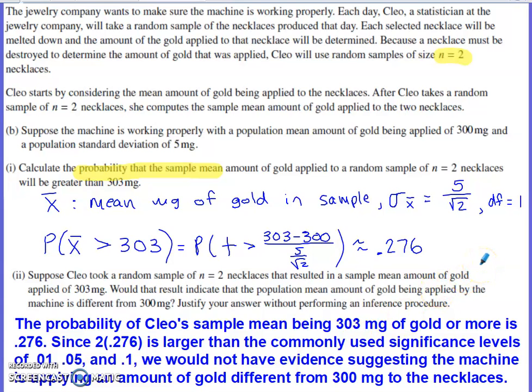And with sampling distributions for means, we're dealing with T distributions. So I also need to recognize what my degrees of freedom measure would be. And for sample means, that's always going to be one smaller than the sample size. In this case, that ends up giving us a degree of freedom value of one. So what's the probability that our sample mean is greater than 303? What's the probability that our T value, our T score? Same sort of structure you see here as I used back in part A. So I'm taking the value I'm trying to measure the probability for, 303, subtracting the mean, and dividing by the standard deviation for the sampling distribution. That gives me a probability of 0.276.